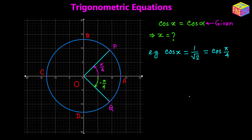OQ makes a negative pi over 4 angle with the positive direction of the x-axis. The x-coordinate of P would be cosine of pi over 4 and the x-coordinate of Q would be cosine of negative pi over 4, but they both equal 1 over square root of 2. So the x-coordinates are the same in this case.